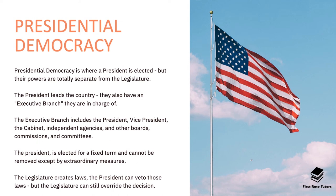Presidential democracy is very different. A president is elected rather than a prime minister, and their powers are totally separate from the legislature. The president leads the country and is part of an executive branch — a separate organisation that includes the president, their vice president, the cabinet, independent agencies, and other boards, commissions and committees. The president is elected for a fixed term — four years in the US — and cannot be removed except by extraordinary measures, in contrast to a parliamentary democracy where a vote of no confidence suffices. In a presidential democracy the legislature creates laws, the president can veto them, but the legislature can still override that decision, giving the legislature significant power over law-making.